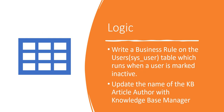So this is the logic: we will write a business rule on the users table which will run whenever a user is marked inactive. We will be running it after a record has been updated, or maybe async, and then we will update the knowledge base article author. The article author will be replaced by the knowledge base manager. This is the logic we will be building, so let's go ahead in ServiceNow and start writing that business rule.